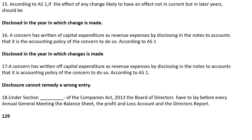According to Accounting Standard 1, if the effect of any change is likely to have an effect not in the current year but in later years, it should be disclosed in the year in which the change is made. So, such an effect should be disclosed in the year in which the change is made.